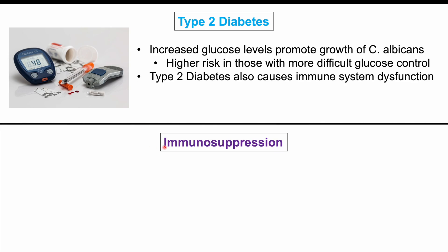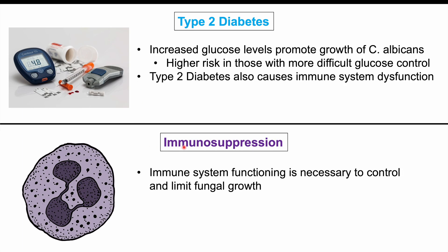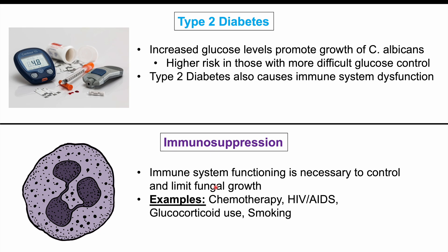Another risk factor is immunosuppression — a suppressed immune system. Immune system functioning is necessary to control and limit fungal growth. Examples of immunosuppression include chemotherapy, being HIV positive or having AIDS, glucocorticoid use especially systemic use, and smoking. Smoking can also be associated with an increased risk of candida infections.